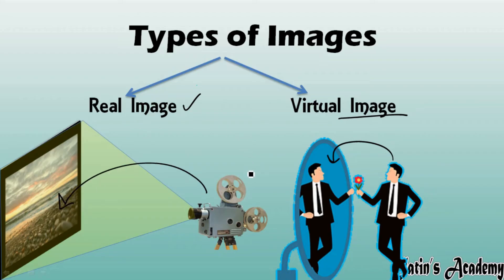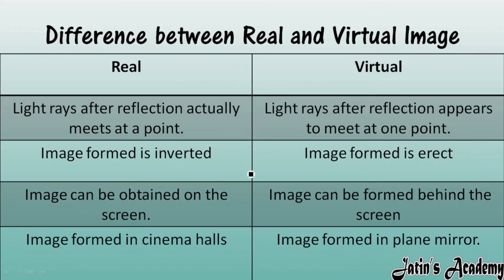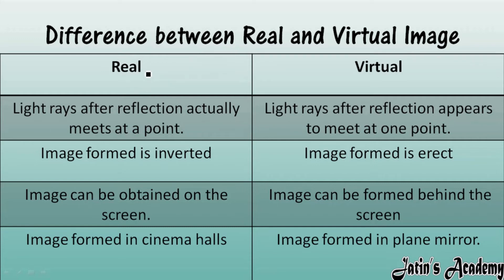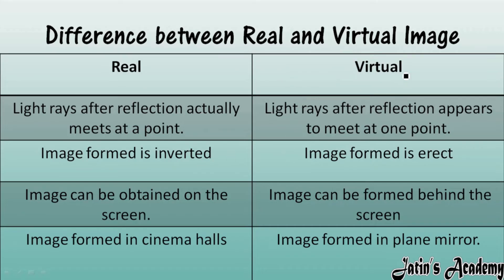The image formed on screen is a real image. The difference between real and virtual image: if light rays after reflection actually meet at one point, that actual meeting point forms a real image. But if light rays after reflection do not actually meet at one point and we have to extend them, they appear to meet at one point — that image formed is a virtual image.